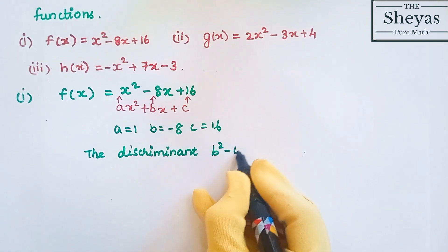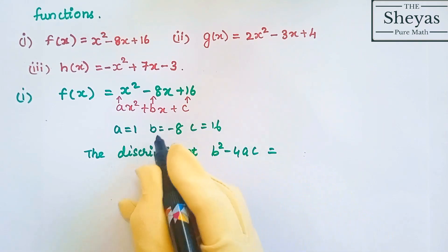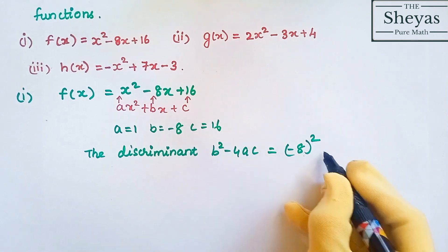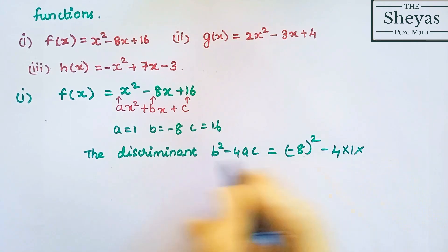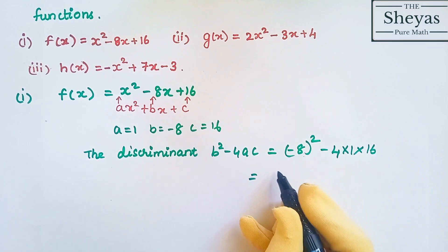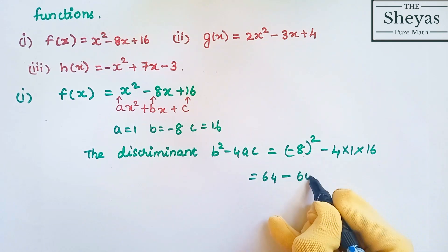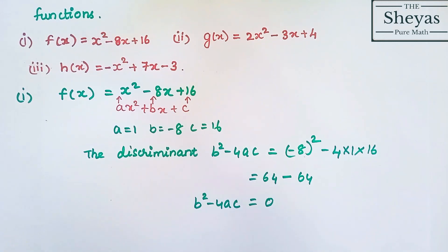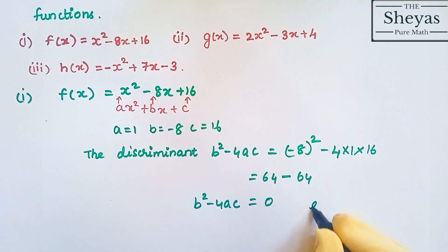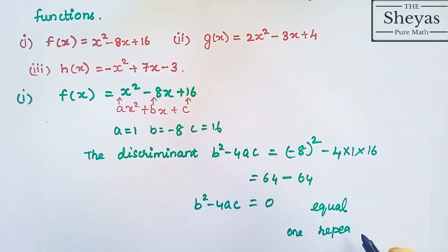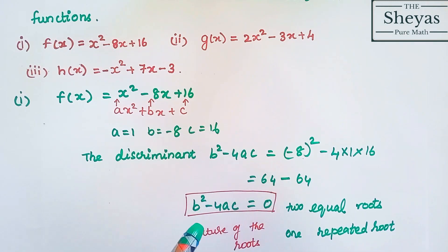The discriminant b squared minus 4ac equals minus 8 the whole square, minus 4 into 1 into 16. Minus 8 squared is 64, minus 4 into 16 is also 64. So the discriminant is equal to 0. The nature of the roots: it has two equal roots, or we can say one repeated root. For example, if the root is 2, both roots are 2; if the root is 3, both roots are 3.